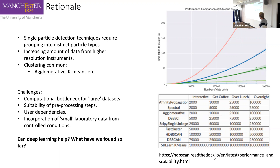Common clustering techniques that we see a lot are hierarchical clustering or k-means, for example. Touching back on the issues with larger amounts of data, we start coming into sort of data bottlenecks. Looking at the right-hand side, you've got techniques such as fast cluster where the time taken to cluster is significantly larger than other techniques such as k-means. You can also see on the bottom here that the amount of particles you can process with k-means overnight is of more order of magnitude larger than something like agglomerative clustering.